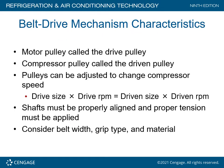Belt driven mechanism characteristics: the motor pulley is called the drive pulley, and the compressor pulley is called the driven pulley. Pulleys can be adjusted to change compressor speed. The formula is: drive size times drive RPM equals driven size times driven RPM. Shafts must be properly aligned and proper belt tension must be applied. Consider belt width, grip type, and material — this is an exact science. If you are changing out belts, you cannot just slip anything on a compressor; it has to be the right type.